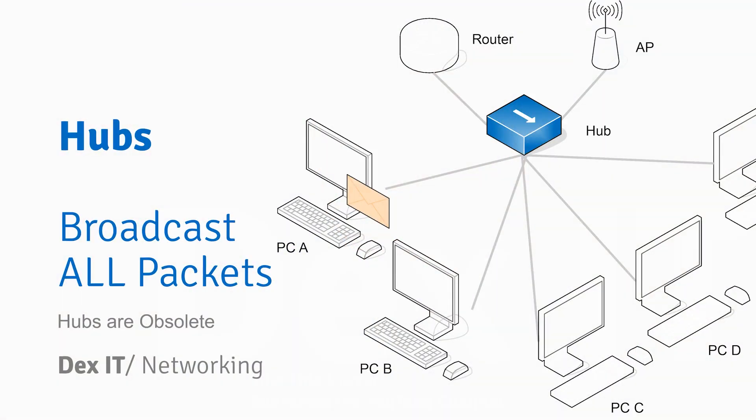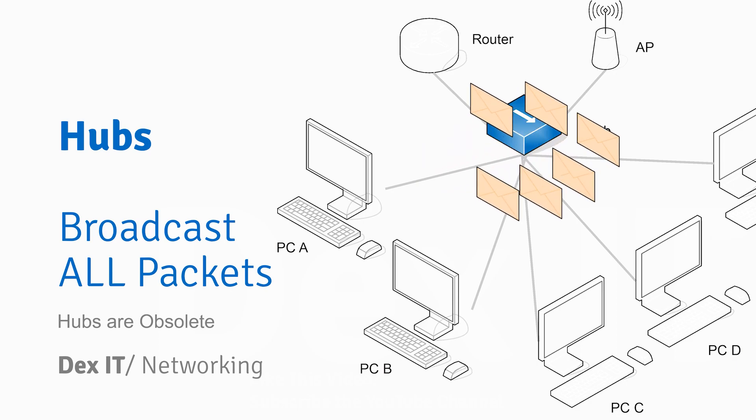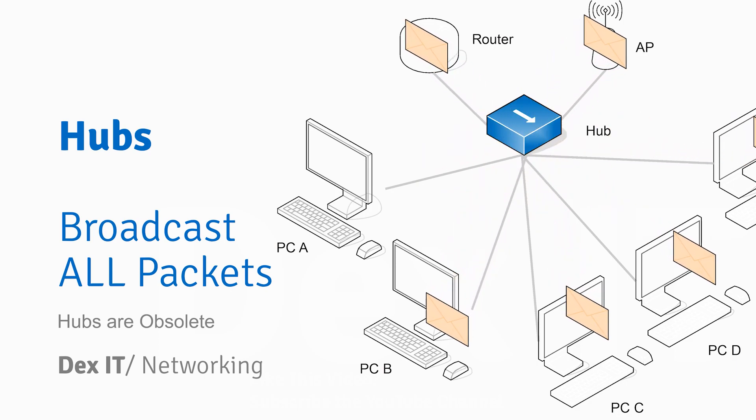How about the hub? When PC-A wants to talk to PC-B, the hub sends the message to all of them — PC-B, PC-C, PC-D, and even the access points and routers all receive the same packet. Everyone is hearing the message, which is not ideal — you only want to talk to PC-B but everyone hears it.